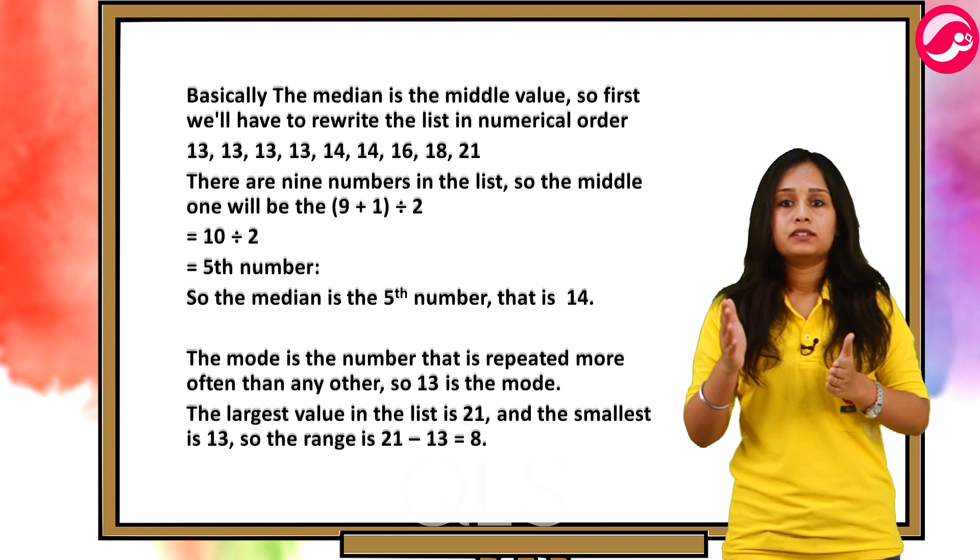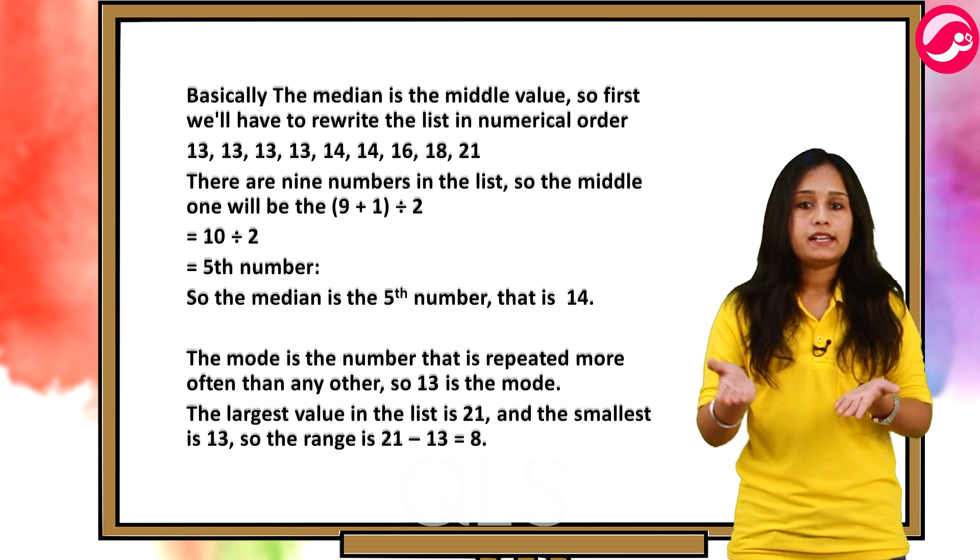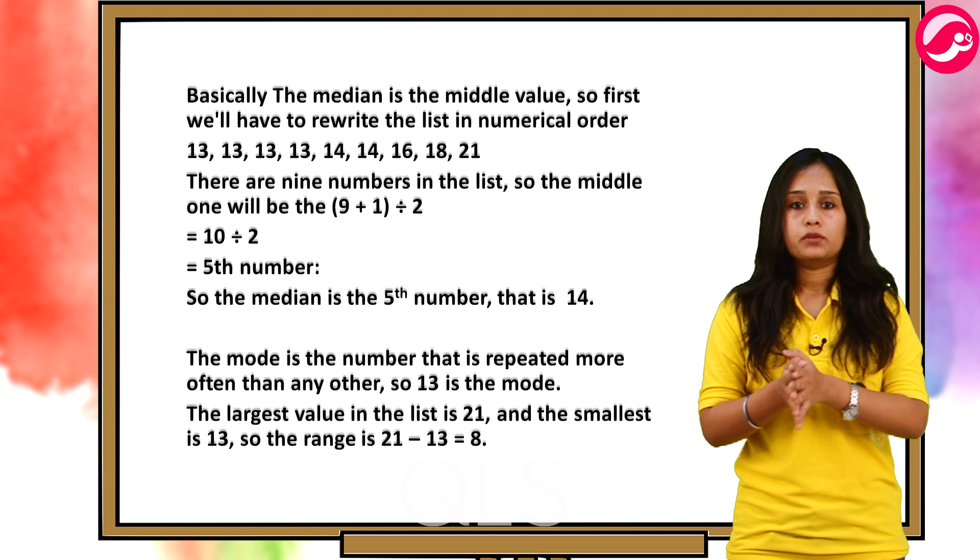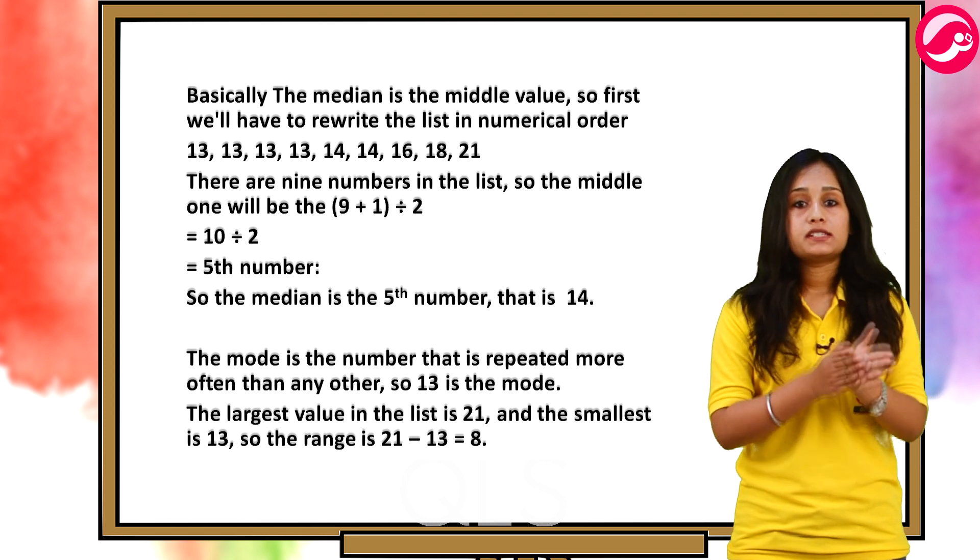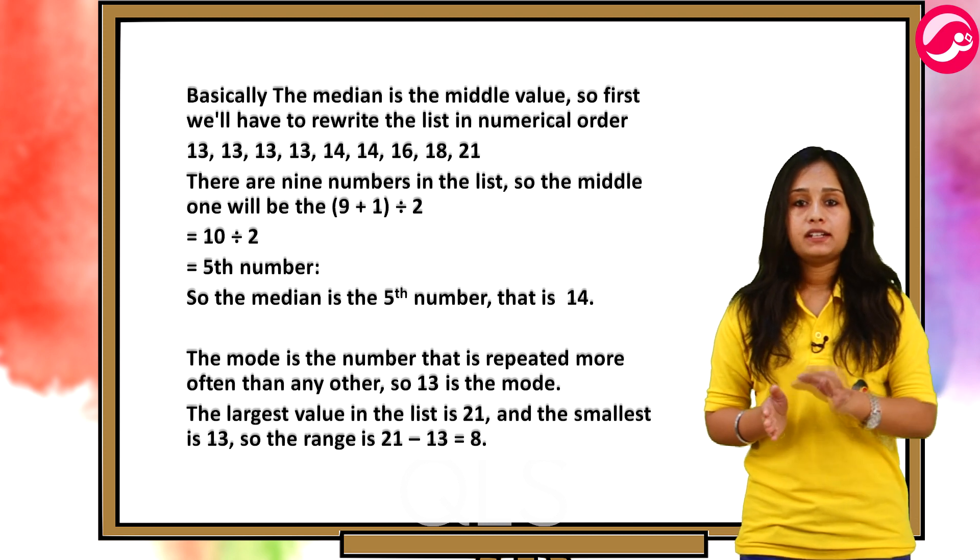The mode is the number that is repeated more often than any other. So, 13 is the mode. The largest value in the list is 21 and the smallest is 13. So, the range will be 21 minus 13 that is equal to 8.